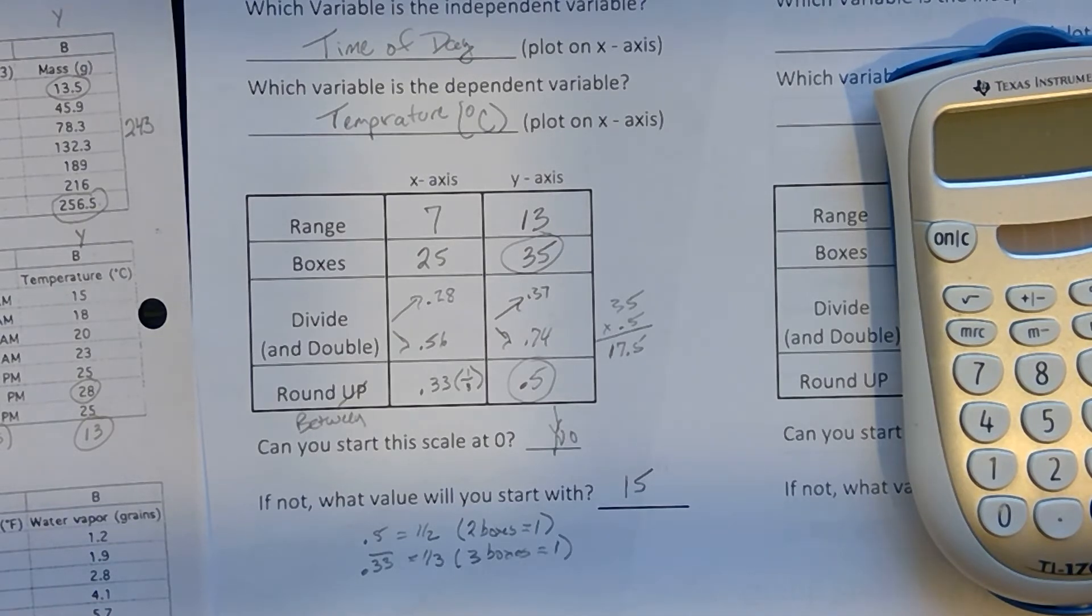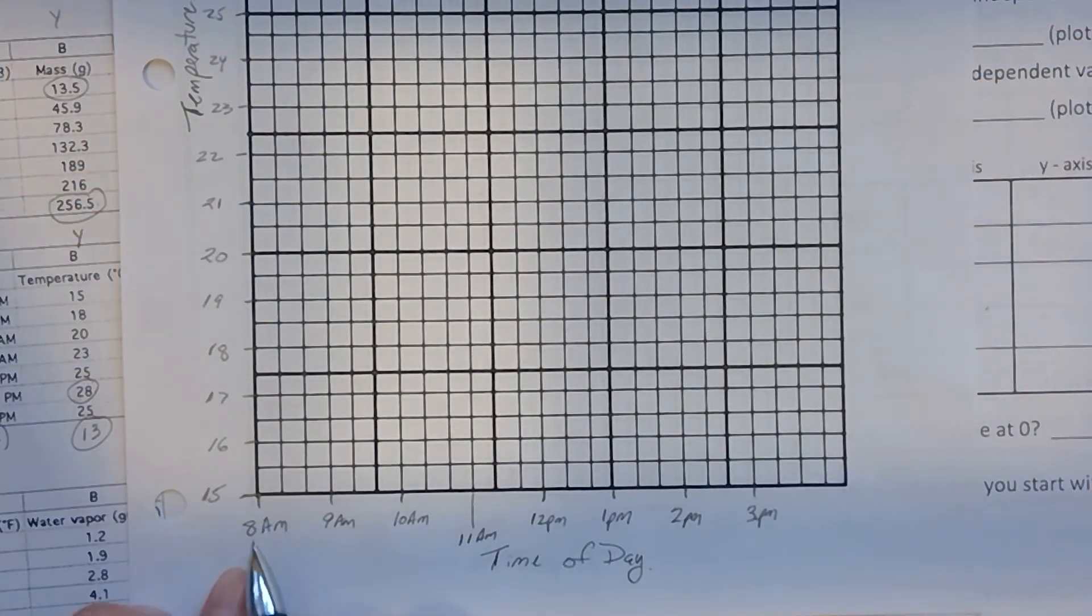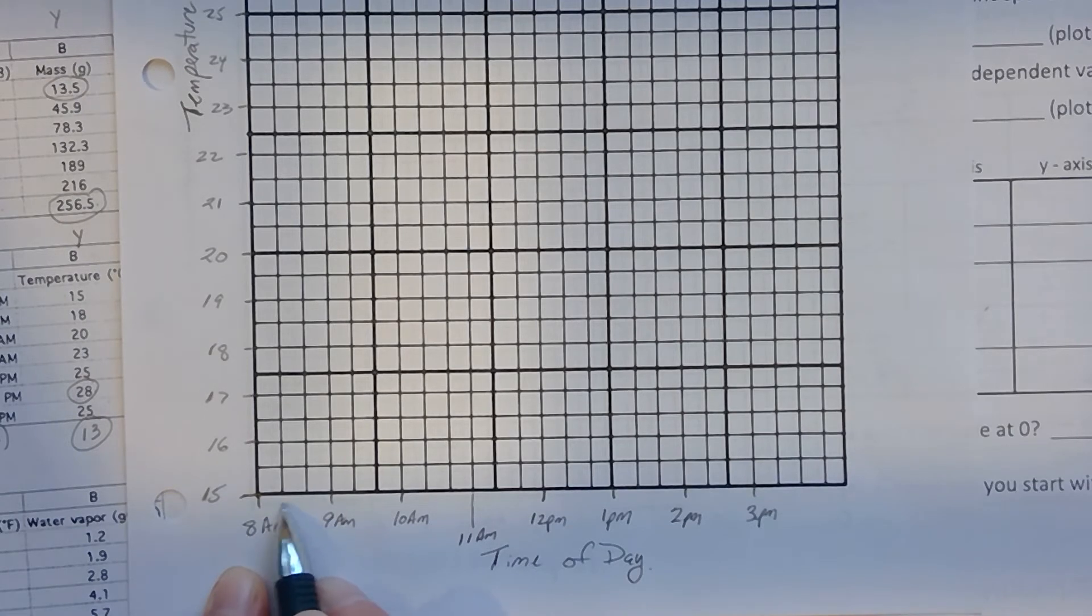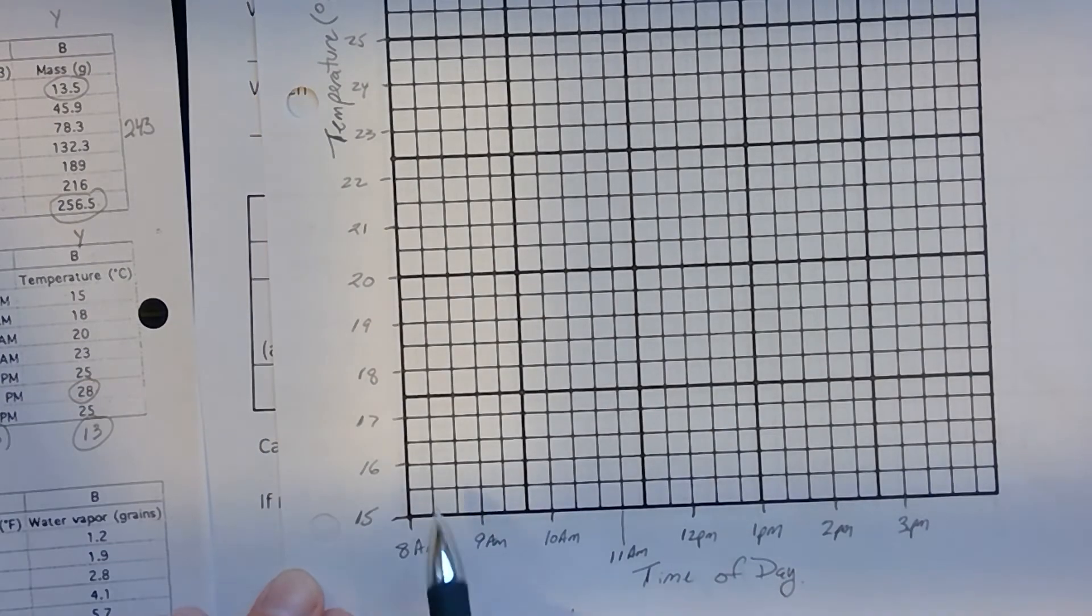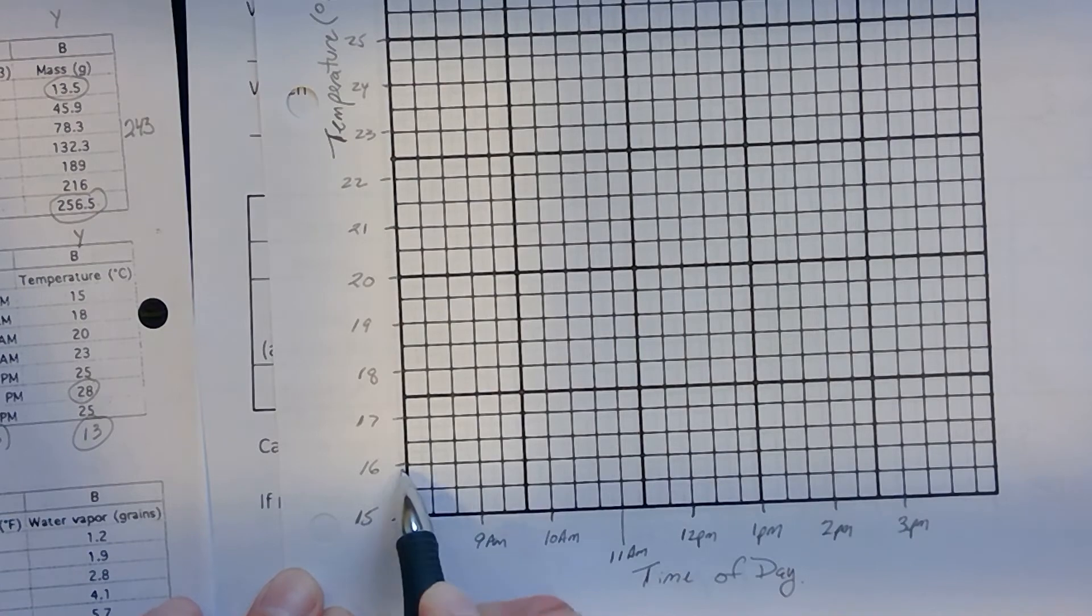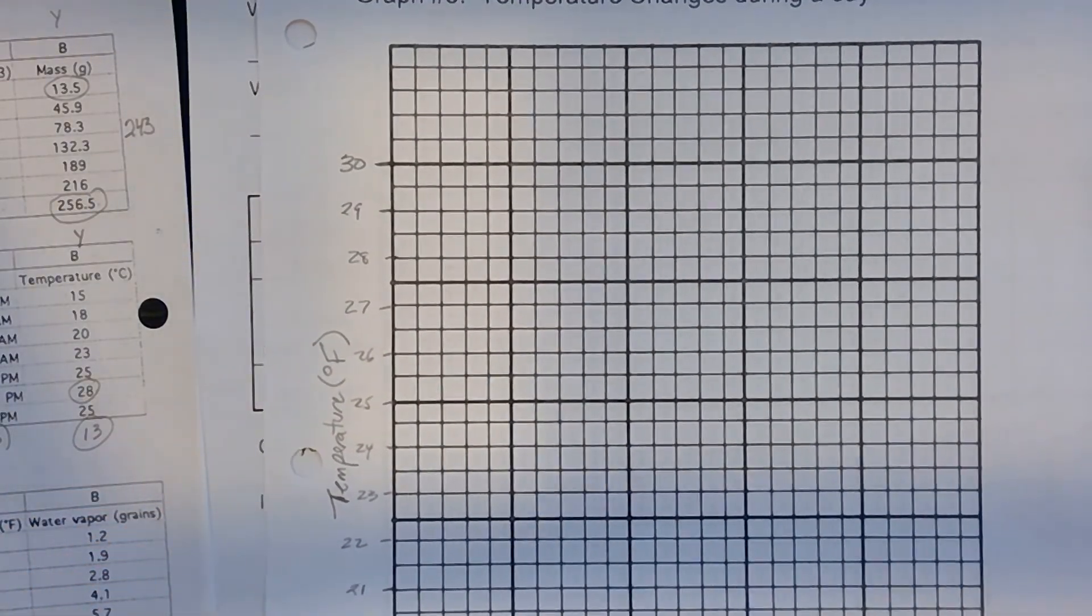Now, just to show you what this might look like. This is the toughest one, but I'm looking at my x-axis. I'm starting at 8 a.m. Every 3 boxes is equal to an hour, and that can get me all the way across to 3 p.m. When I'm looking vertically, I couldn't start at 0, so I start at 15, and I go every 2 boxes is 1 because my interval is 0.5. That'll get you all the way up past the value for 28 that you have to graph.